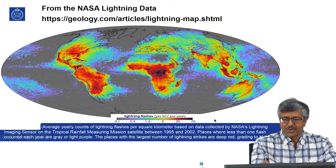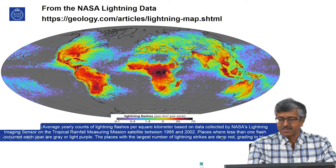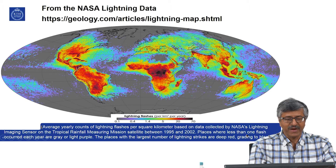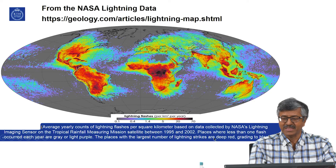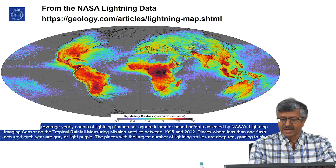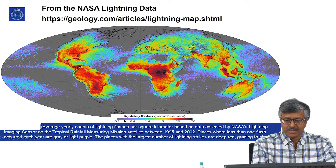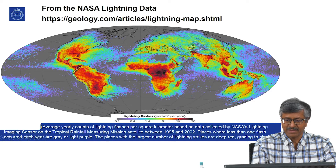The color coding is as follows: places where less than one flash occurred each year are grey or light purple, and places with the largest number of lightning strikes are deep red grading to black on the scale. Blue means fewer lightning strikes, and red means a very large number.